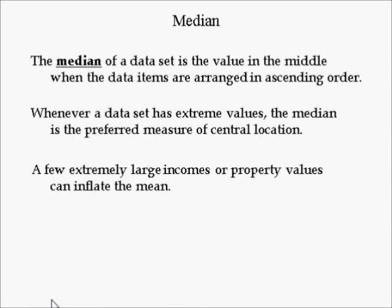The median is another measure of central location. It is equal to the mean when the distribution is symmetric. The value in the middle of a data set is the median. If there is no middle number — which occurs when the data has an even number of observations — it is the average of the two middle numbers. To find the median, you first must order the data from minimum to maximum. Whenever the data has extreme values or is skewed, the median is the preferred measure of central location because it represents the value that splits the distribution into the upper and lower halves.